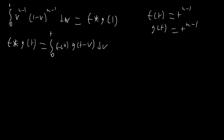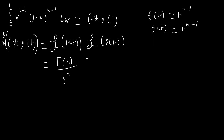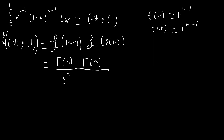Taking the Laplace transform of f convolved with g as a function of t, we get the Laplace transform of f(t) times the Laplace transform of g(t). The Laplace transform of f(t) = t^(n-1) is (n-1)!, but we'll write it using the gamma function to generalize: gamma(n) / s^n. Similarly for g: gamma(m) / s^m. So we end up with gamma(n) * gamma(m) / s^(n+m).